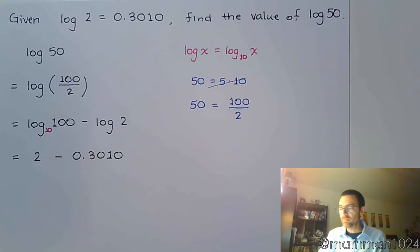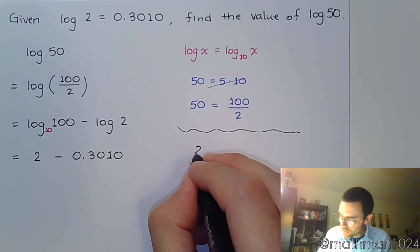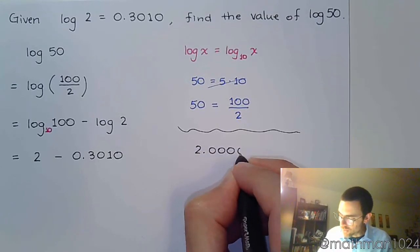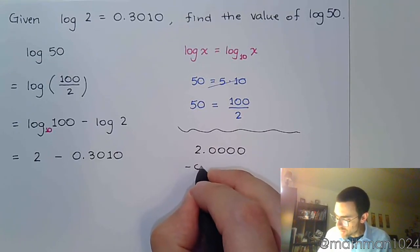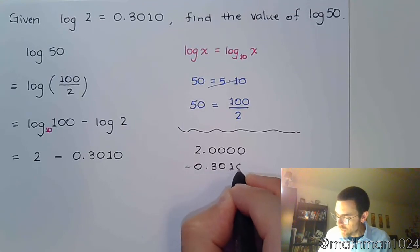And now we just need to subtract. Now here's a little trick here. If I do it like this, I say 2 point, let's make sure that I have all my zeros lined up like this, minus 0.3010.